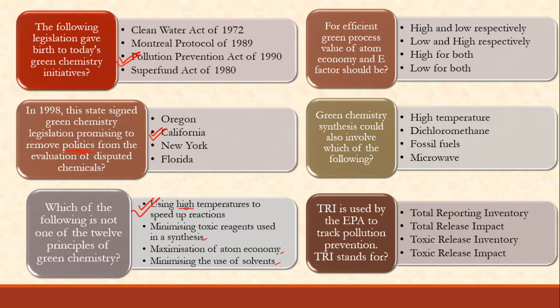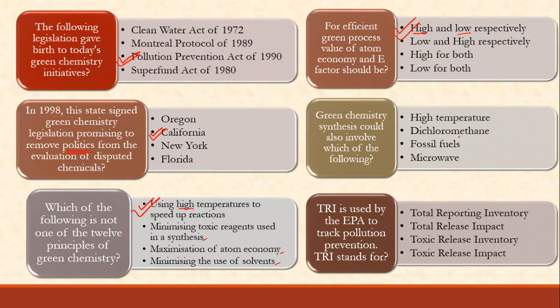For an efficient green process, the values of atom economy and E-factor should be what? Atom economy is calculated as molecular mass of the desired product divided by total product mass — the desired product should be more, so atom economy must be high. E-factor is the amount of waste divided by mass of product — so E-factor should be low. The answer is: atom economy high, E-factor low, respectively.